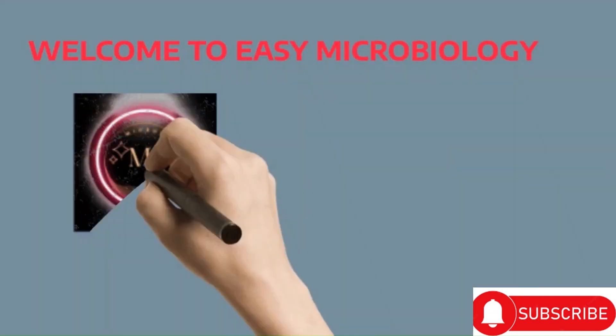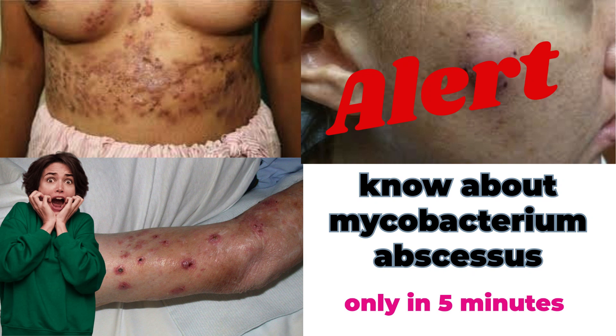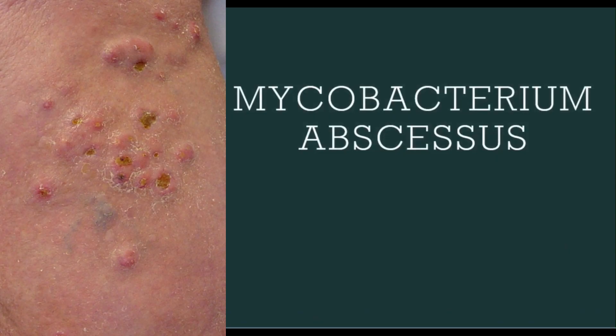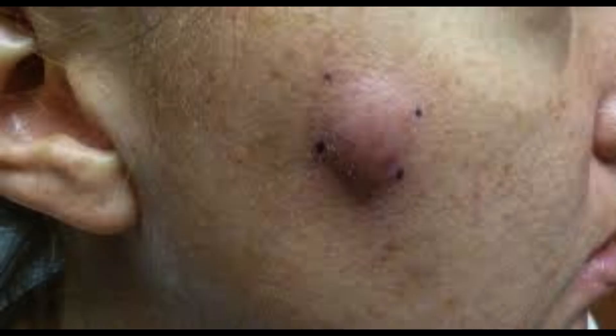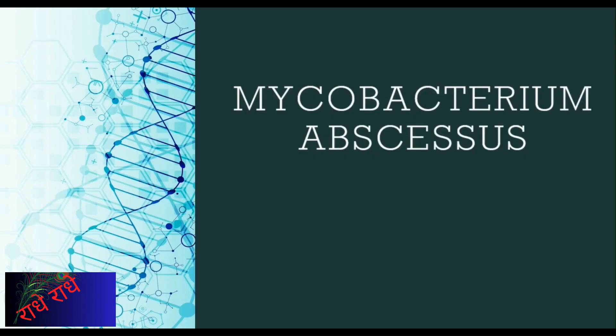Welcome to Easy Microbiology. Good morning everyone. Today we will be discussing the opportunistic pathogen Mycobacterium abscessus. We will explore its habitat, morphological features, biochemical characteristics, host range, virulence factors, mechanisms of antibiotic resistance, and more. Let's take a closer look and begin.